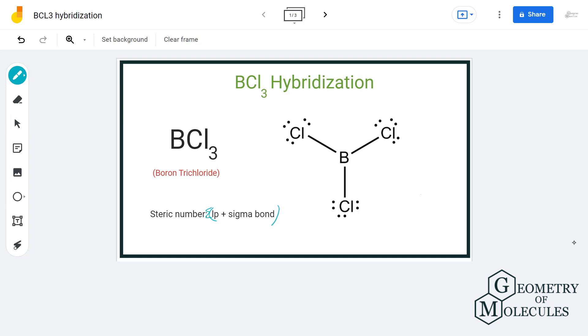Now, let us have a look at the Lewis structure of BCL3. We can clearly see that central atom boron has formed 3 sigma bonds with 3 chlorine atoms and has 0 lone pairs of electrons attached to it.